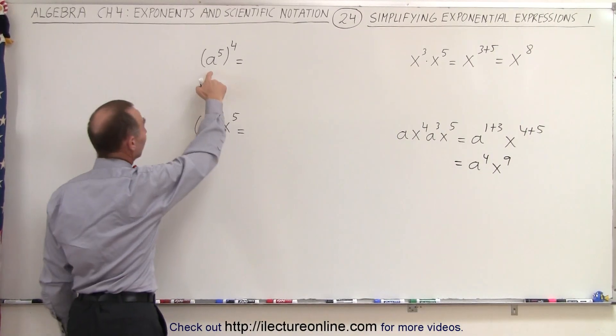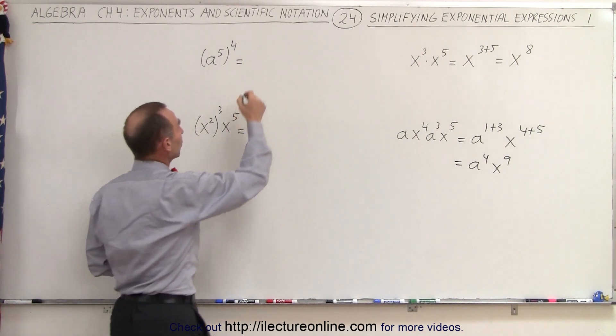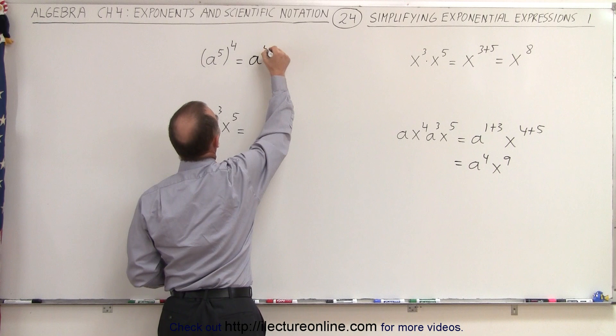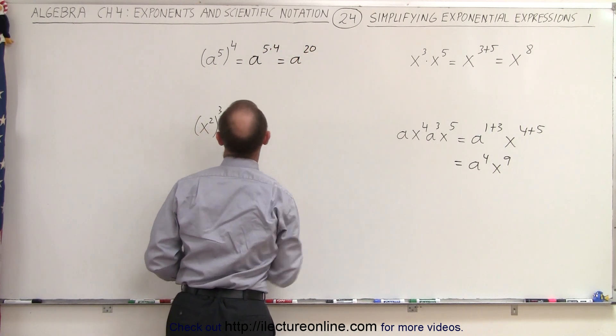On this example, the rule is when we have an exponent raised to another exponent, we multiply the exponents. So this becomes a to the 5 times 4, which is a to the 20th power.